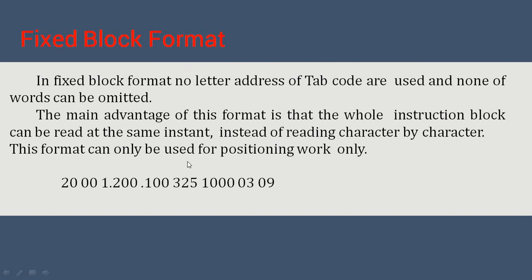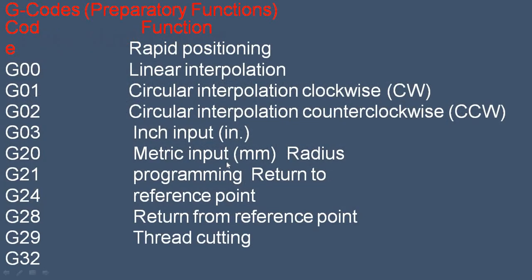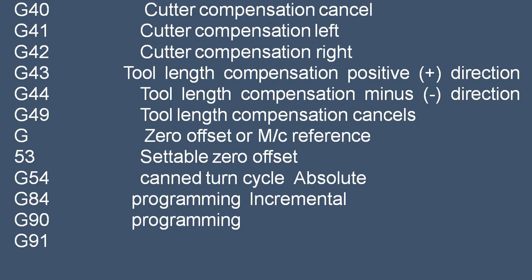G-codes and their functions are shown in this figure. G00 is rapid positioning; G01 is linear interpolation; G02 is circular interpolation clockwise (CW); G03 is circular interpolation counterclockwise (CCW); G20 is inch input. These codes are used in preparing the required programming. G40 is cutter compensation cancel; G41 is cutter compensation left; G42 is cutter compensation right; G43 is tool length compensation.